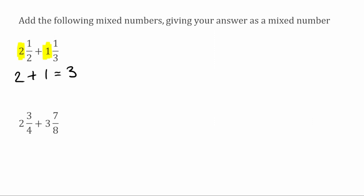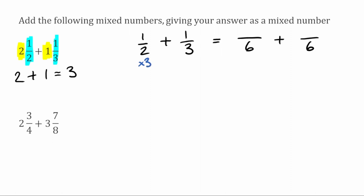We're then going to take a look at the proper fractions. We've got one half and one third. When we're adding fractions, we want the same common denominator. The lowest common multiple of two and three would actually be six. So we can find equivalent fractions for both of these over six. Starting with the half, we'd have done two multiplied by three to get six, so because we've multiplied the bottom by three, we'd also multiply the top by three. So one times three gives us three.